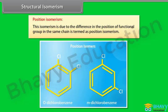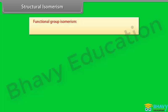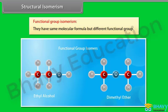Position isomerism is due to the difference in the position of a functional group in the same carbon chain. Functional group isomers have the same molecular formula but different functional groups.